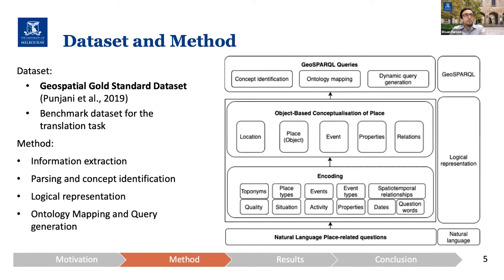This is the overview of the method we have proposed for generating GeoSPARQL queries from natural language place-related questions. In the first step, we perform an encoding to extract relevant information from the content of place-related questions, such as place names, place types, event names, event types, spatial-temporal relationships, dates, activities, situations, and so on.